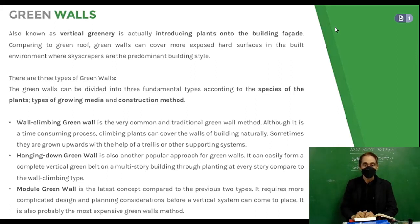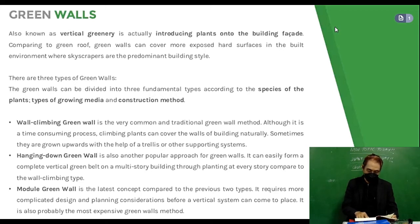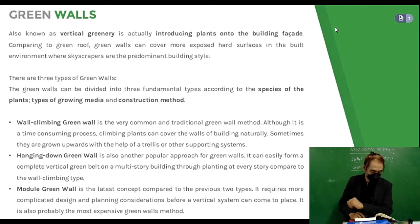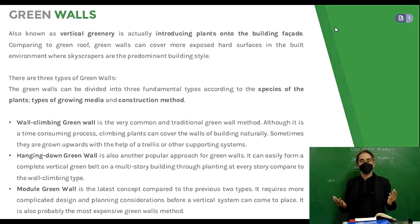Wall climbing green wall is a very common and traditional method. Although it is a time-consuming process, climbing plants can cover the walls of a building naturally; sometimes they are grown upwards with the help of a trellis or other supporting system. Hanging down green wall is another popular approach, which can easily form a complete vertical green belt on a multi-story building through planting at every story.